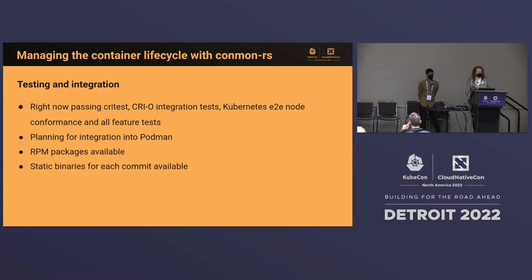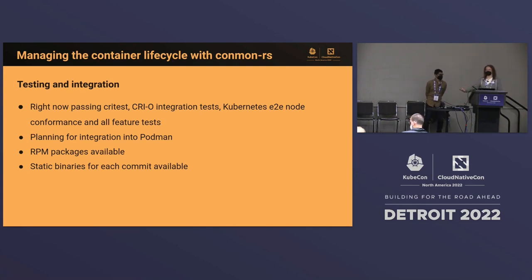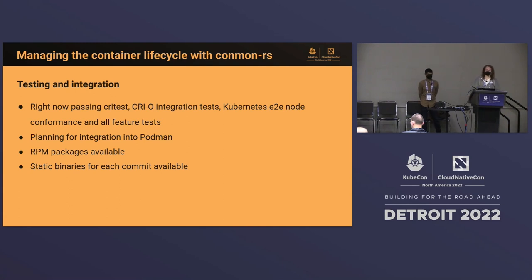Right now conmon-rs is passing CRI tests, integration tests, and node e2e tests — basically all tests that CRI-O expects for full Kubernetes compliance. We're planning for integration into Podman; there are a couple more pieces we need for Podman that we haven't gotten to yet. We have RPM packages available and static binaries available for each commit, so you can download and use it currently. We're looking to add more distribution packages as it stabilizes.